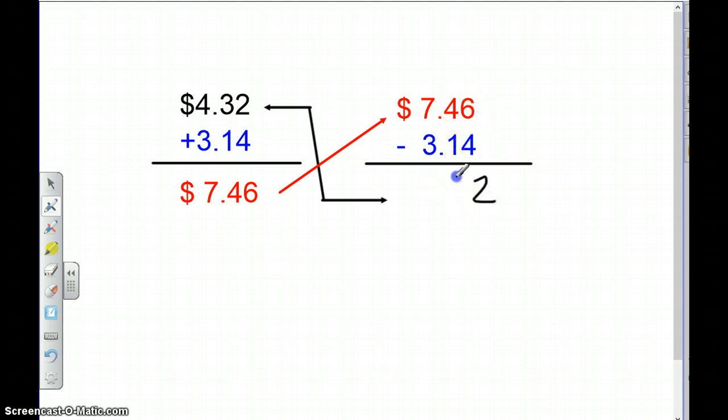4 minus 1 is 3. We're going to bring that decimal down. 7 minus 3 is 4. We can't forget our dollar sign. So do we have all three same numbers that we started with? Check, check, check. Our answer is correct. So you see that opposite inverse relationship.